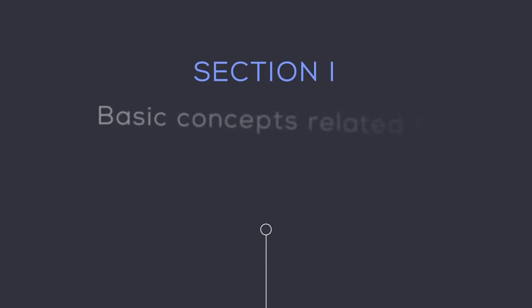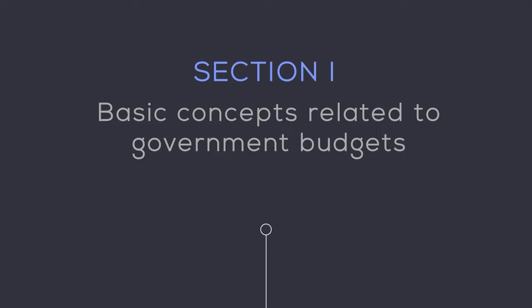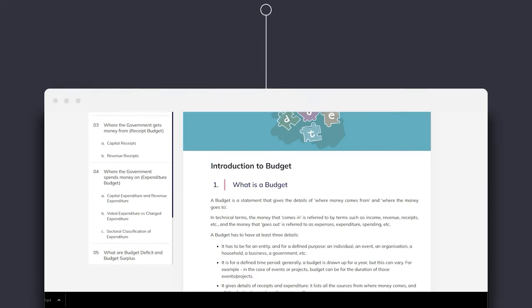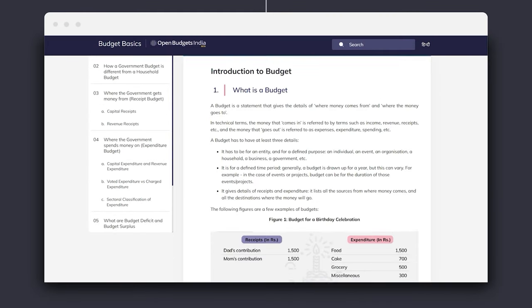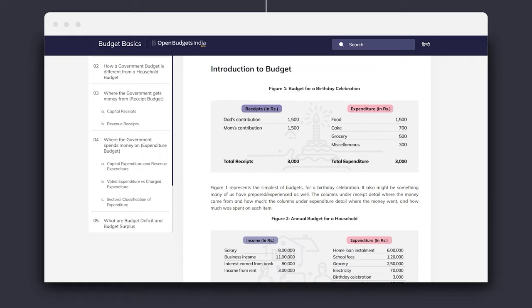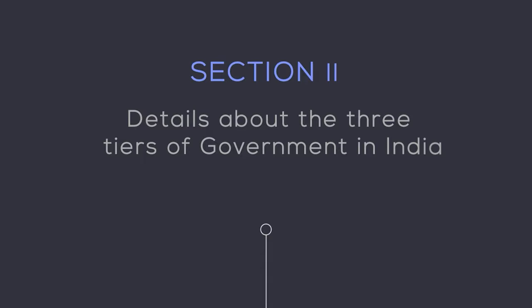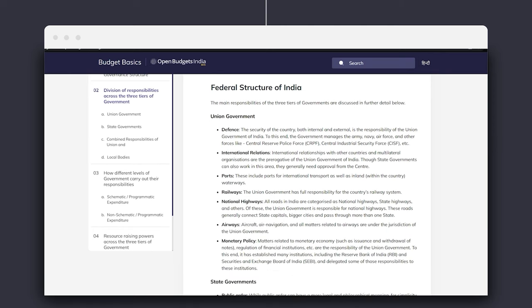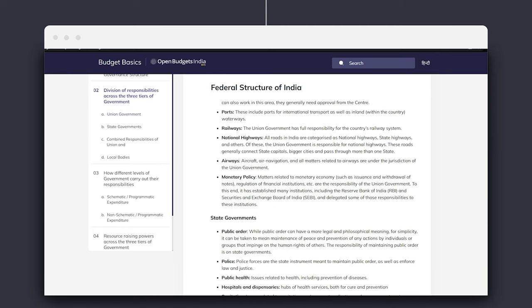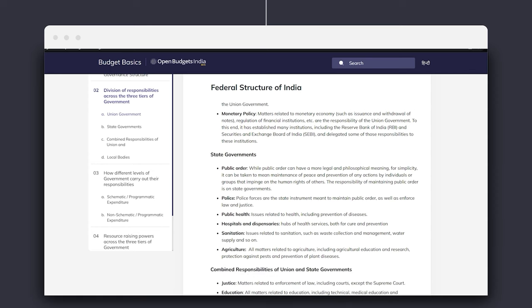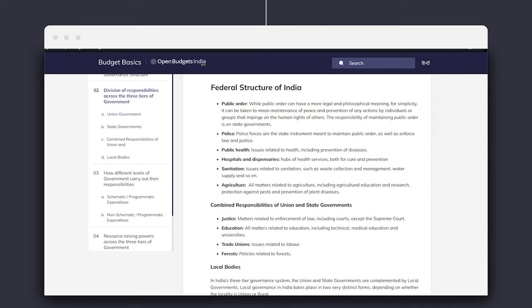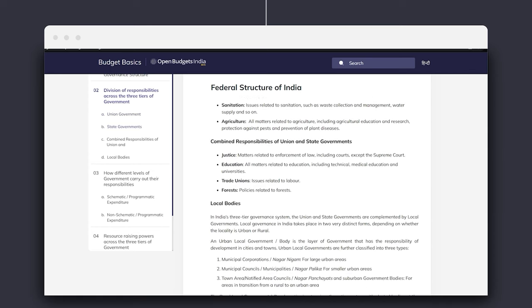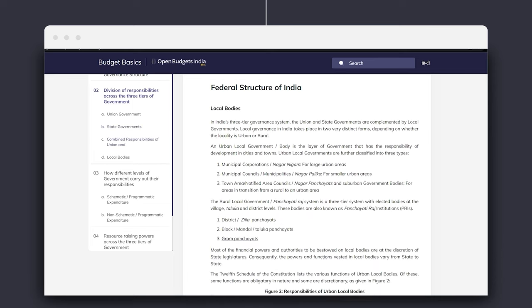Section 1 explains some basic concepts related to government budgets, such as what is a budget, where does the government get money from, and where this money is spent. In India, there are three tiers of governments, namely the union government, state governments, and local governments like municipalities and panchayats. Section 2 provides details about the division of responsibilities for public provisioning and power to raise resources across all three tiers of government.